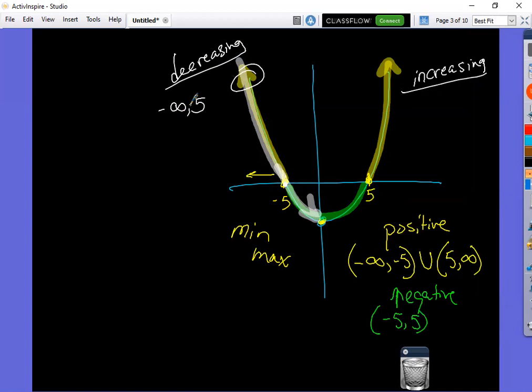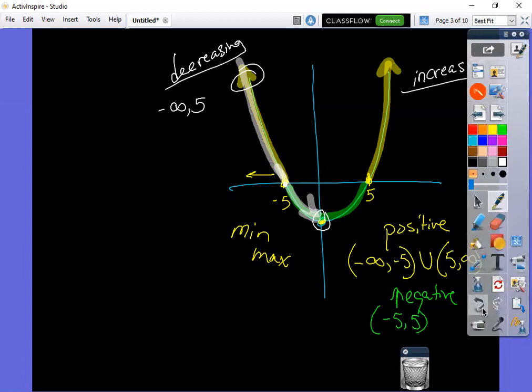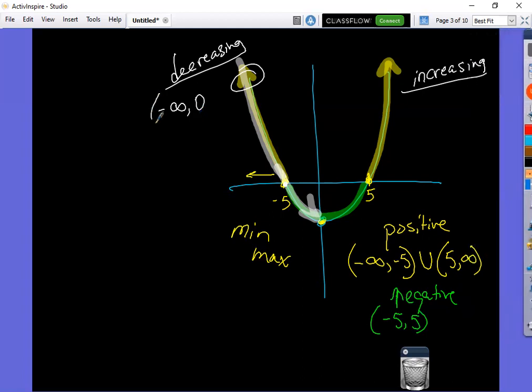I'm sorry, not even at the five. It goes all the way to the zero point right here where it turns around. So not five, all the way to zero would be decreasing. Infinity is always a parenthesis. At the zero right here on the y-axis, it's changing direction. So again, that's not decreasing or increasing. So it wouldn't be included.